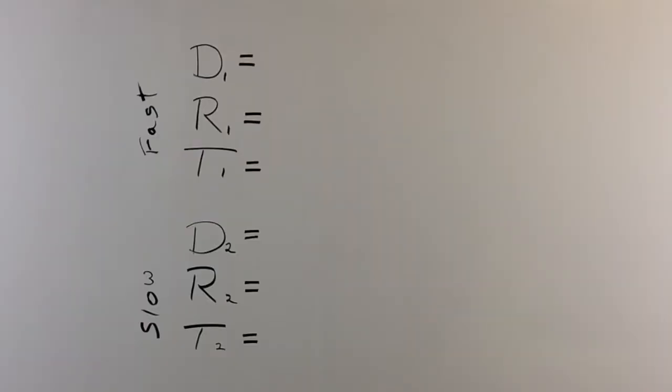The first body in motion is going to be fast. We're going to call it fast. And the second body in motion we're going to call that slow. Now the rate for the first body in motion was 55 miles per hour. The rate for the second body in motion was 40 miles per hour.